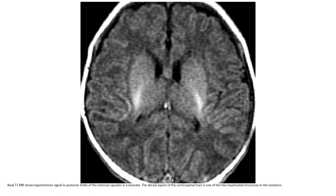T1 image shows a hyperintense signal in the posterior limb of the internal capsule in a neonate. The dorsal aspect of the corticospinal tract is one of the first myelinating structures in the newborn.